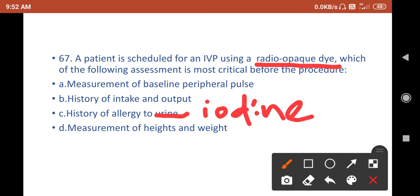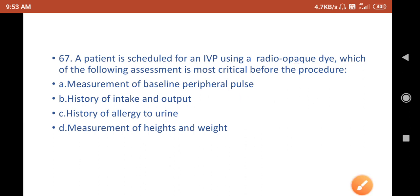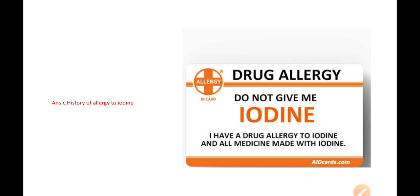Measurement of pulse, intake output, height, and weight is carried out regularly for the patient, but you should ask for the history of whether the person is allergic to iodine or not. As we are injecting a radio-opaque dye, a contrast to the patient, it is important to confirm whether the patient is allergic to iodine or not, or else he'll land up into a critical situation. You can see here, the answer is history of allergy to iodine.